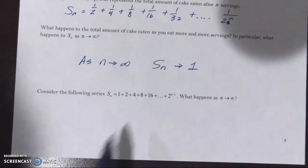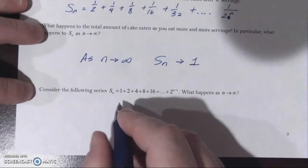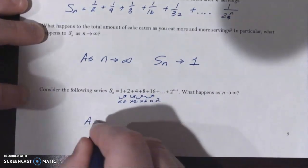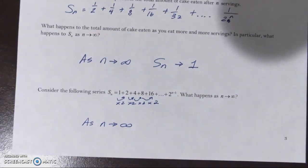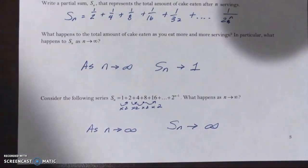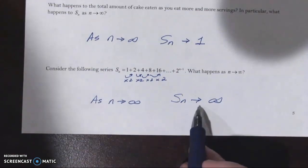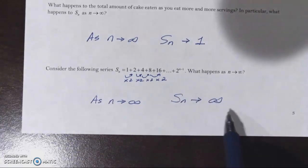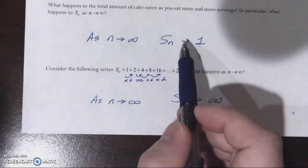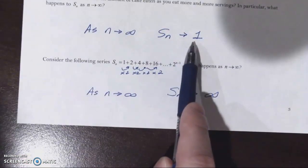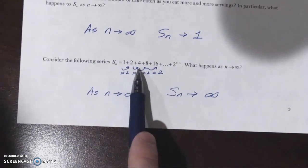Now consider this series: 1, 2, 4, 8, 16 — two to the n minus 1. This is geometric; we're multiplying by 2 every time. As n goes to infinity, as these terms continue to increase, the partial sum is never going to stop growing. The sum of this one is going to go off to infinity as well. Infinity is not something we would say the sum of an infinite series equals.